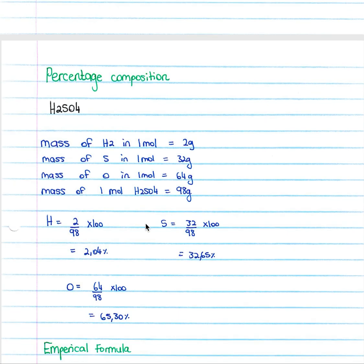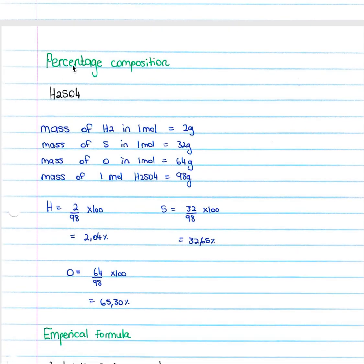In percentage composition, if you're given something like H2SO4 and they ask you for percentage composition, you're simply going to take the mass in one mole of this. So your mass of H2 in one mole is two grams, your mass of S in one mole is 32 grams simply off your periodic table, your mass of oxygen in one mole is 64 grams, and your mass of one mole of H2SO4 is 98 grams.